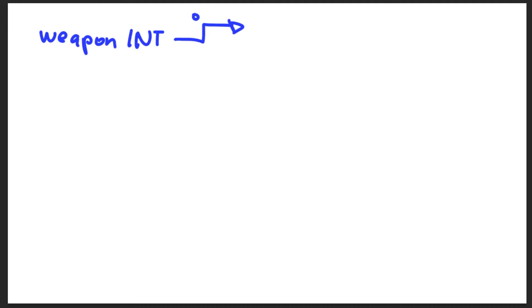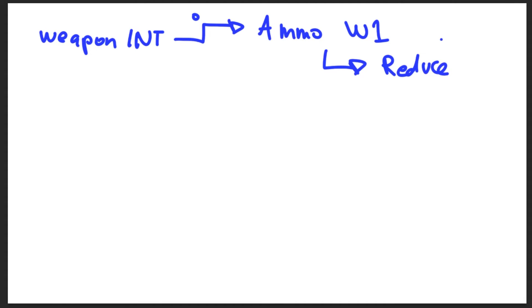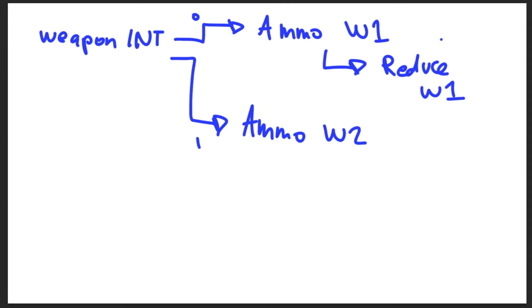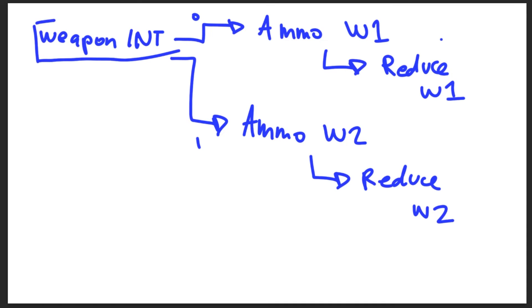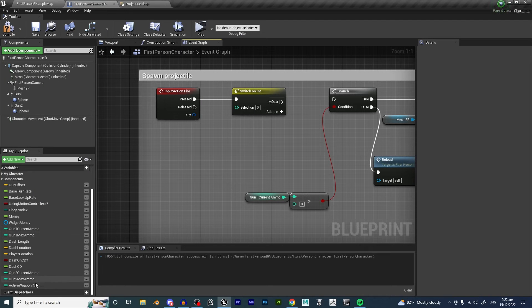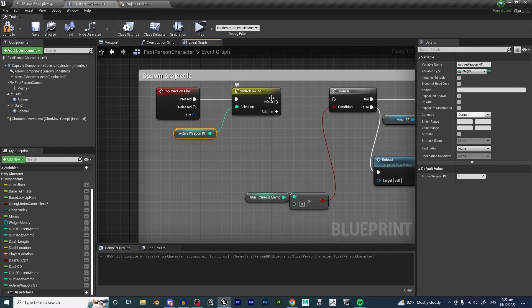My plan is to use WeaponInt to determine which weapon's ammo to use. If WeaponInt equals 0, we use the ammo for Weapon 1, and whenever we fire from Weapon 1 we reduce ammo from Weapon 1. If WeaponInt equals 1, meaning we are in Gun 2, we use and reduce the ammo from Weapon 2. This is why we set up WeaponInt — so we can determine what weapon is active and manipulate the correct ammo. We plug in our ActiveWeaponInt here.